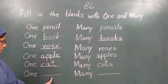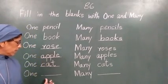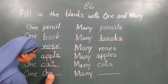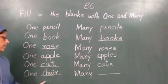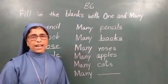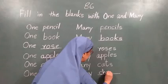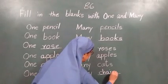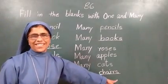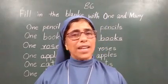Okay. One dash. One dash. One dash, many dash. Idhar one chair dehenge. C-H-A-I-R. One chair. Toh idhar kya ayenge? Many chairs. Very good. Many chairs. Chairs is pili. C-H-A-I-R. Yes. Very good. C-H-A-I-R. Yes. Okay. One chair. Many chairs. Okay. C-H-A-I-R. Yes. Okay.